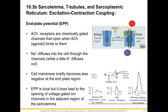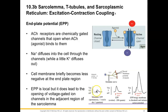Starting with our end plate potential or EPP: acetylcholine binds to its receptor, which is a chemically gated channel — acetylcholine being our chemical or agonist. When bound, the channel opens and sodium moves into the cell while potassium diffuses out. Our cell membrane briefly becomes less negative. This is shown in a graph of voltage in millivolts over time. The small bump toward more positive is called a miniature EPP, and that alone is not enough to generate an action potential.